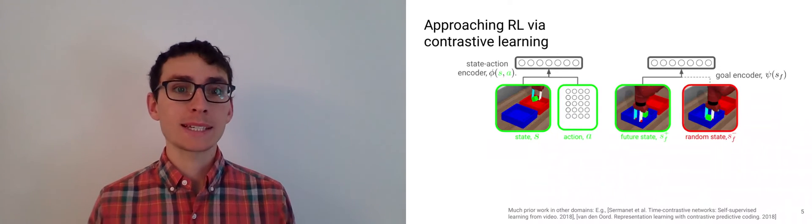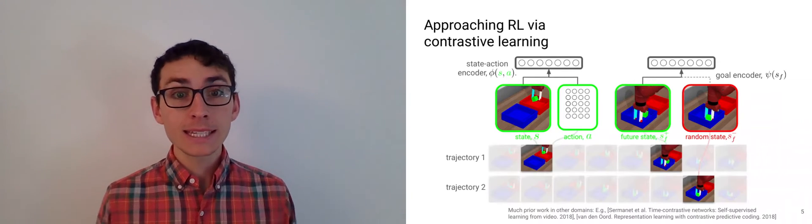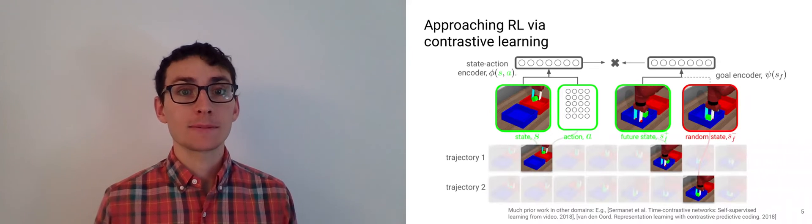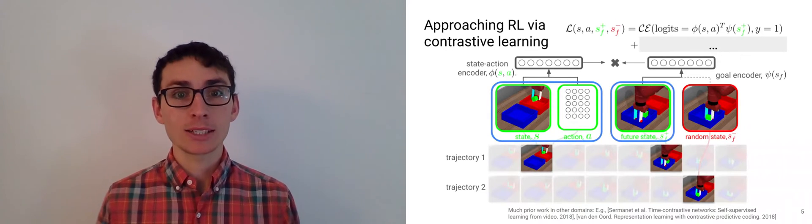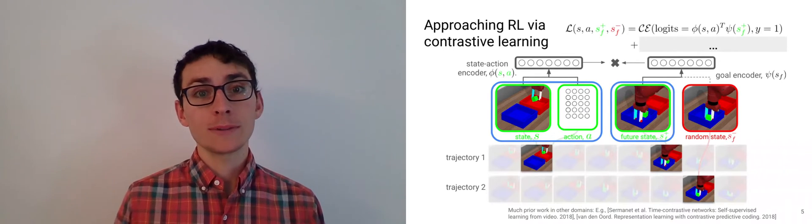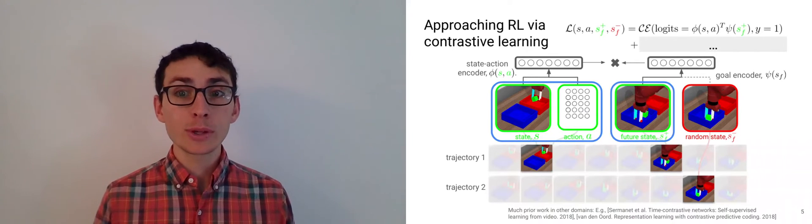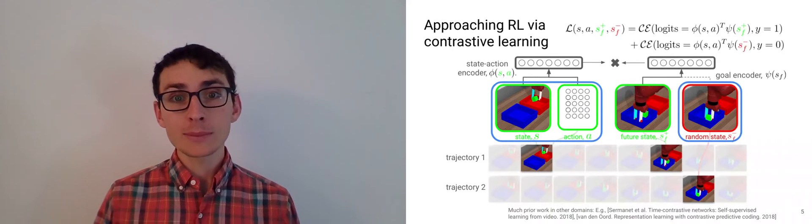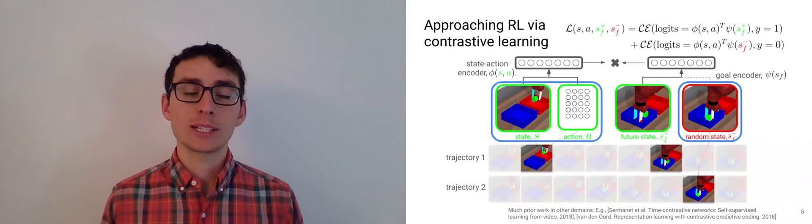We're going to learn two representations, one of states and actions, and one of future states. The data will be sampled from trajectories. We'll sample the positive examples using a state and an action and a future state from the same trajectory. Precisely, we'll use a future state sampled from a geometric distribution that allows us to draw a connection with Q values. And we'll sample random states from different trajectories and push those representations further apart from each other.